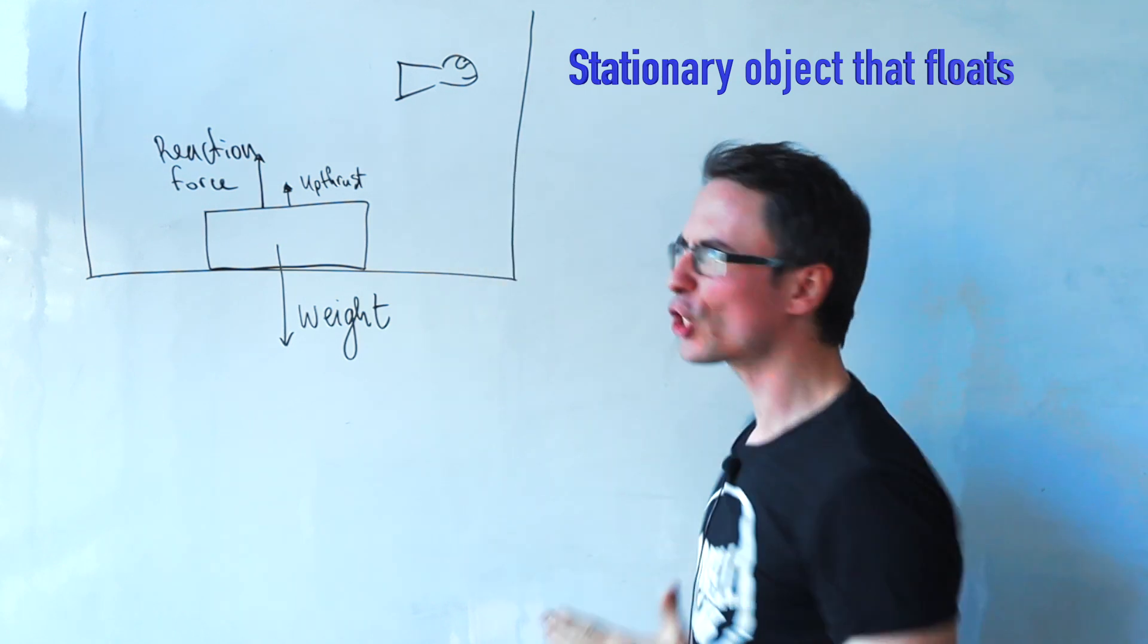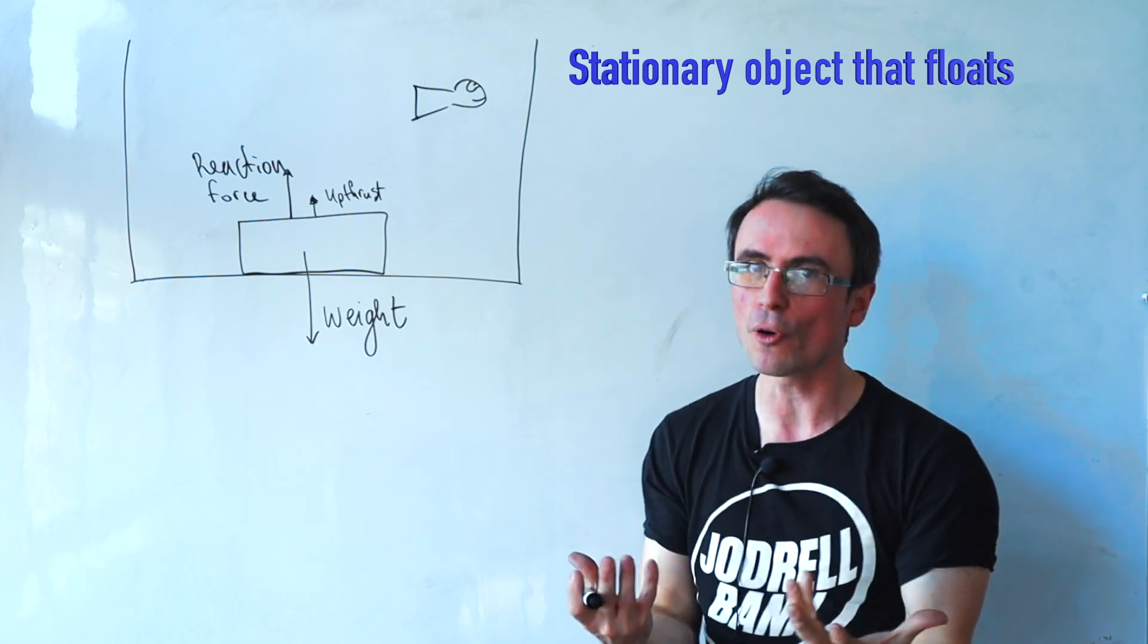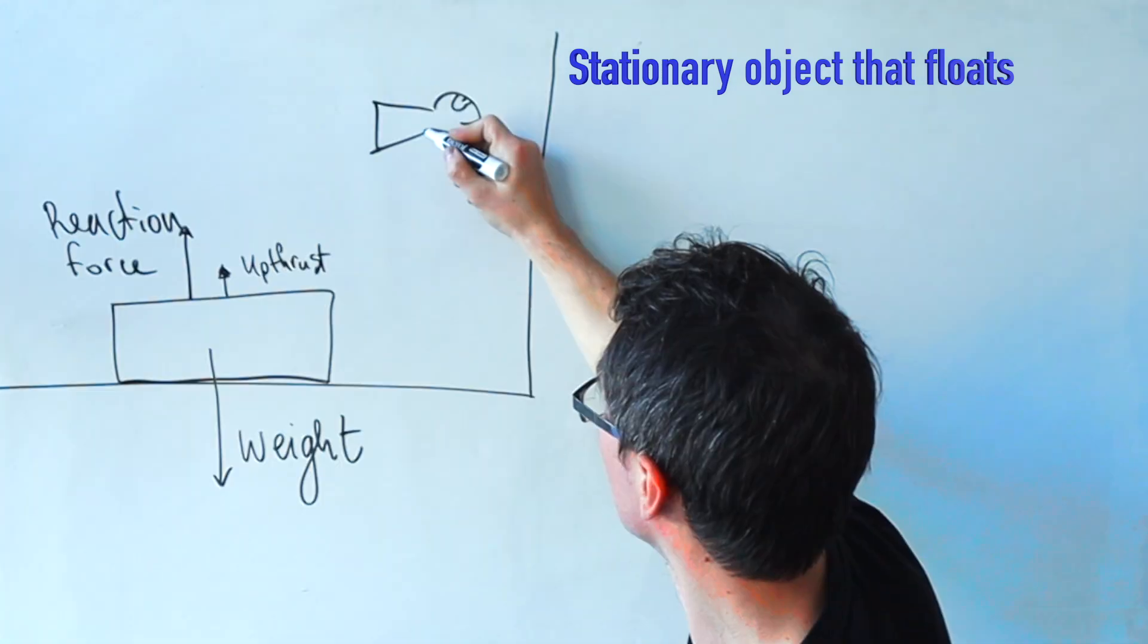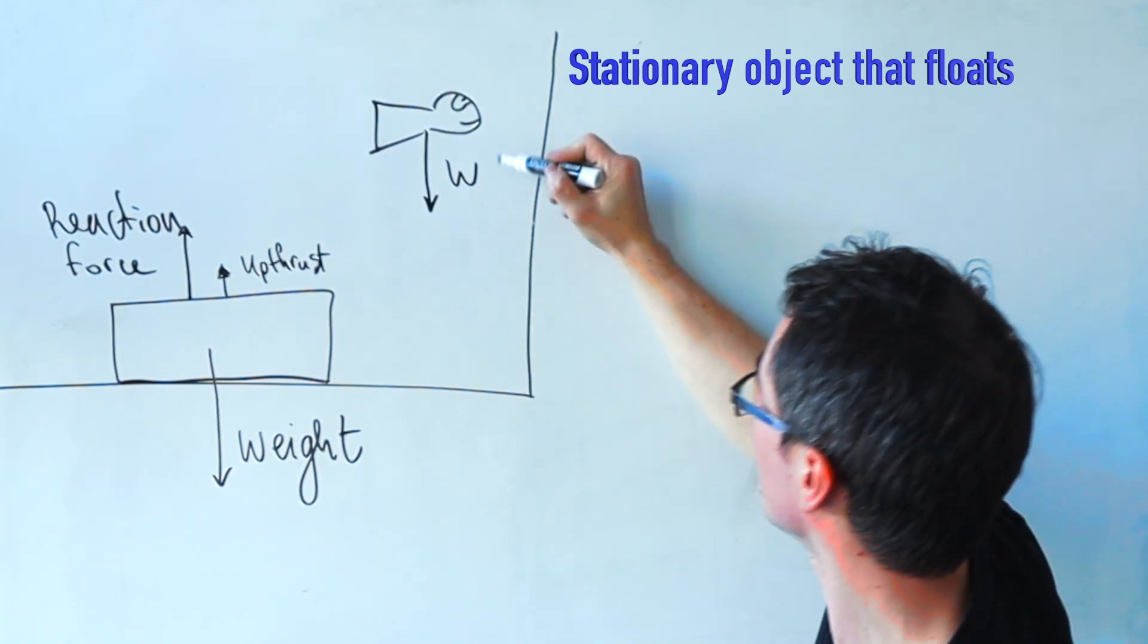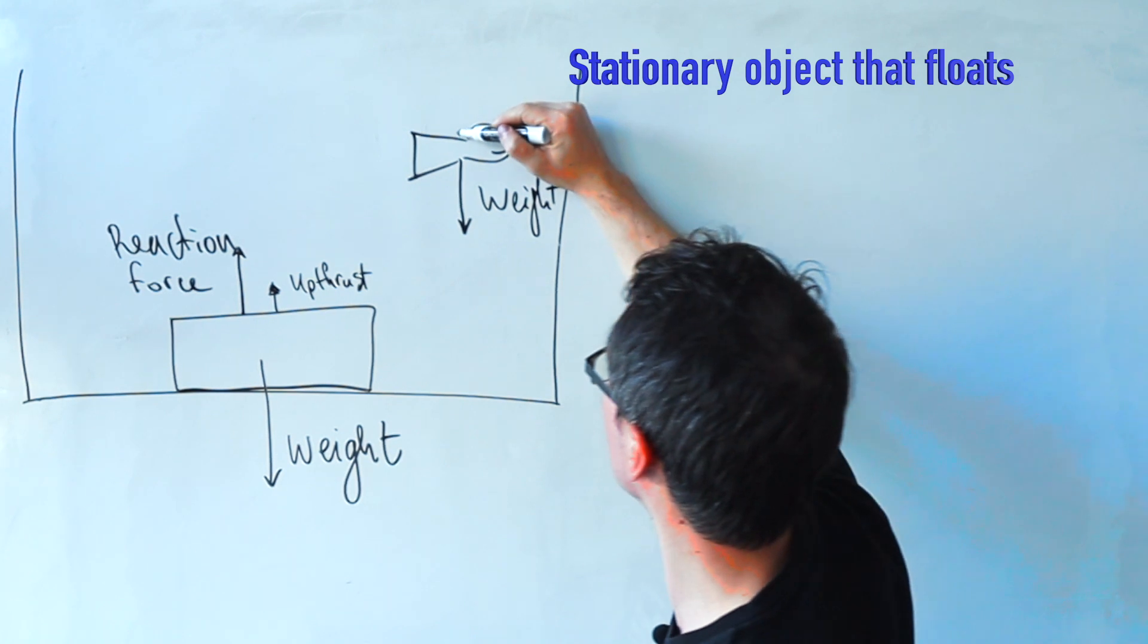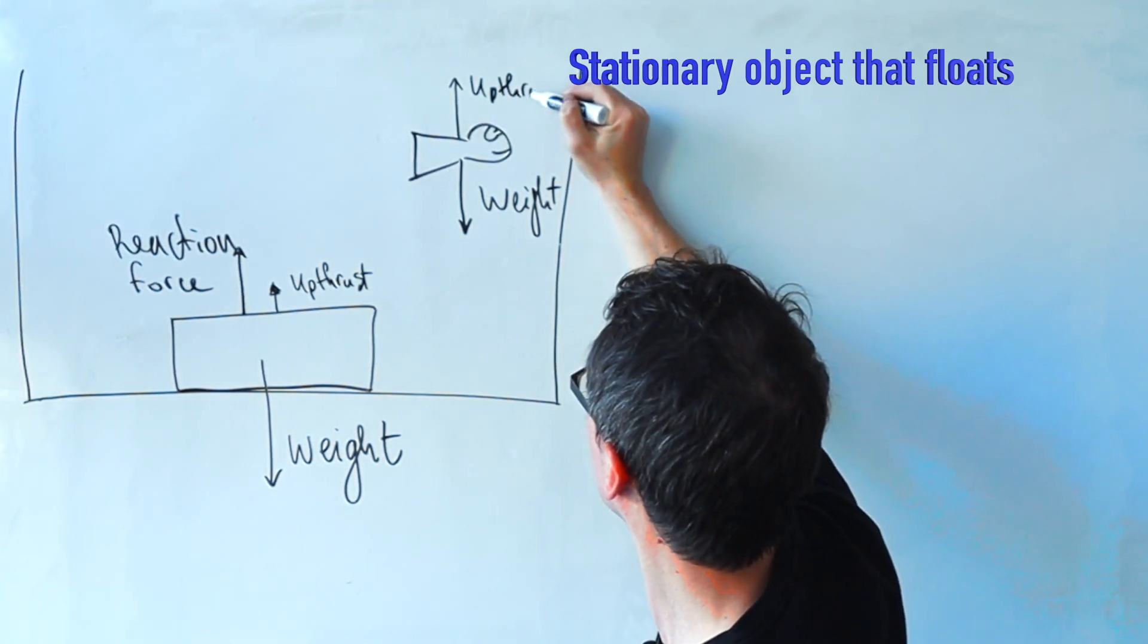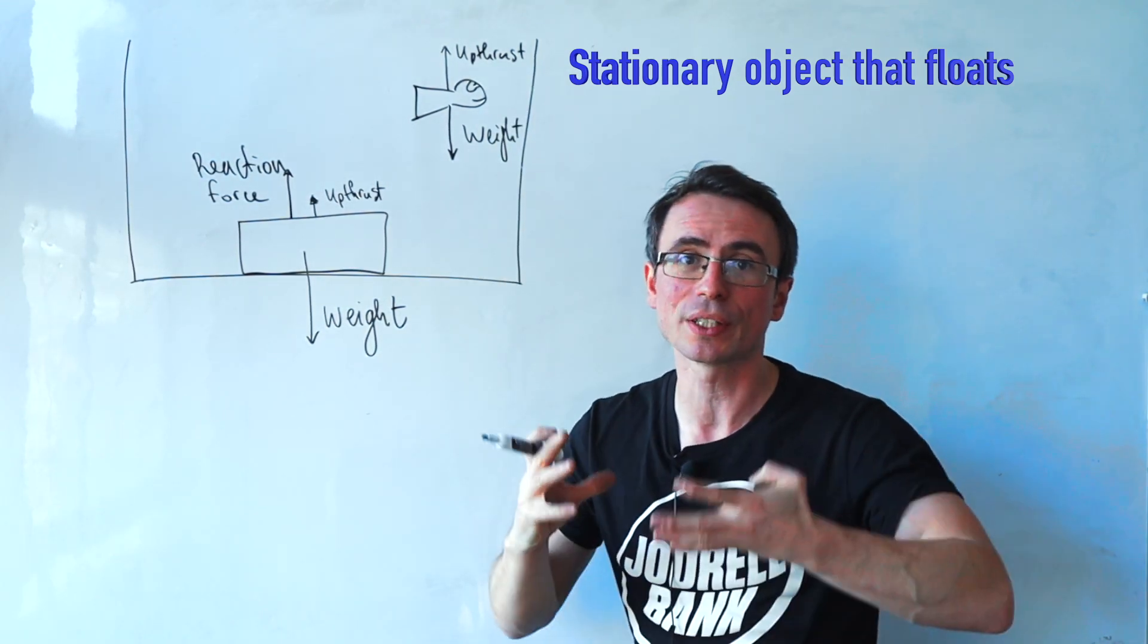Imagine you have a fish that is just relaxing and it's stationary. What forces are acting on it? Well, if the fish is stationary, we're going to have the weight acting downwards and the upthrust acting upwards. Those two will be the same for any object that floats.